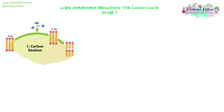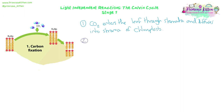The light independent reactions are actually known as the Calvin cycle - that encompasses all of the reactions we're going to talk about. It happens in a cycle named after the man who discovered it. First step: carbon dioxide enters the leaf through the stomata and diffuses into the stroma of the chloroplast, because that's where the Calvin cycle is taking place. Next, that carbon dioxide is combined with a five-carbon compound called RuBP - ribulose bisphosphate.